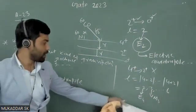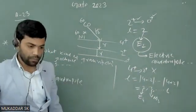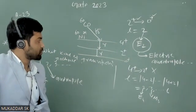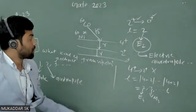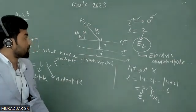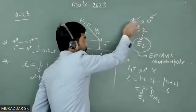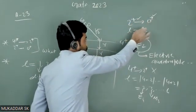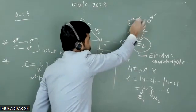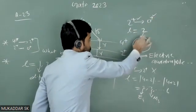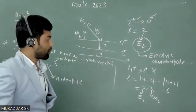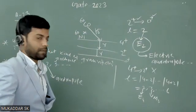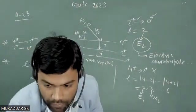So for the first transition, many L values are allowed, but according to given options, only one is allowed. For 2+ to 0+ state, there is only one transition allowed, and for that, angular momentum of photon will be 2 and there is no change in parity, so that corresponds to E2 and represents electric quadrupole transition, and that is perfectly matching with option C. Thank you.